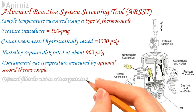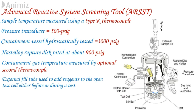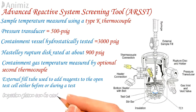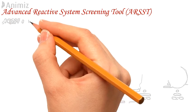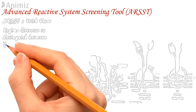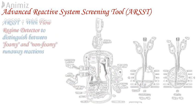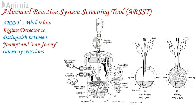An external field tube can be used to add a reagent to an open test cell either before or during the test, and an injection piston can be used to add a reagent against elevated back pressure. ARSST can also be available with a flow ringman detector, which allows the operator to distinguish between foamy and non-foamy runaway reactions. It comprises a small immersion heater and an attached thermocouple positioned in the upper freeboard space of the test cell, with an auxiliary control box containing a dedicated power supply for the sensors.